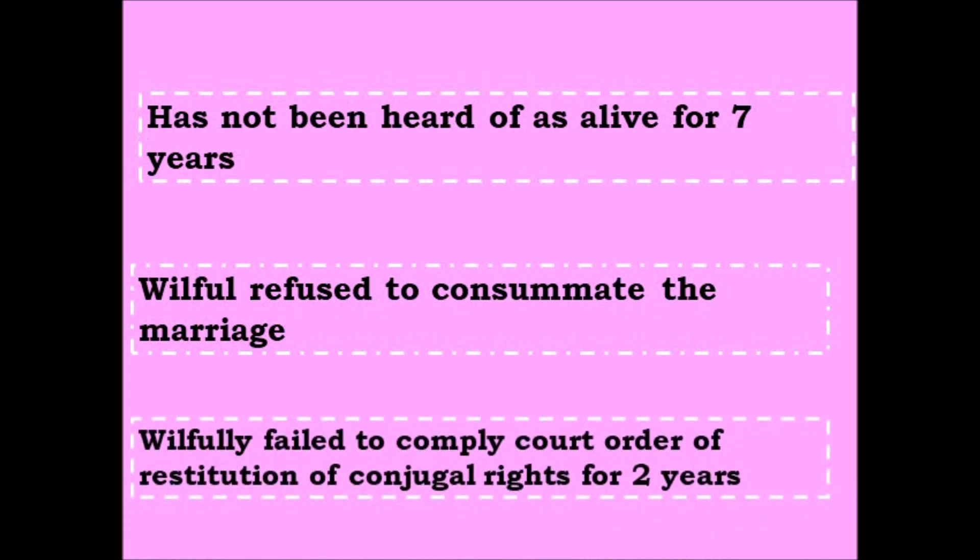Another ground is willfully failing to comply with a court order for restitution of conjugal rights for two years. If a party goes to court saying the other party is not living as husband or wife, and the court orders them to do so, and that party still does not comply for two years after the court order, that becomes a ground for divorce.